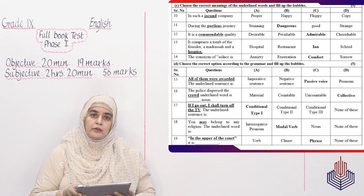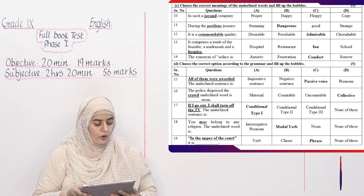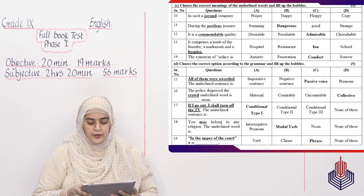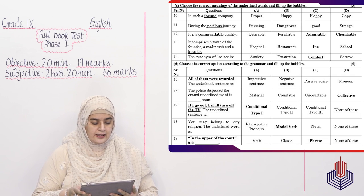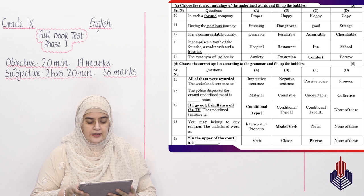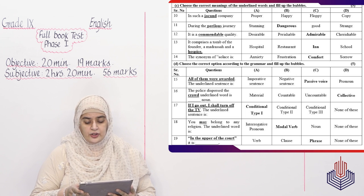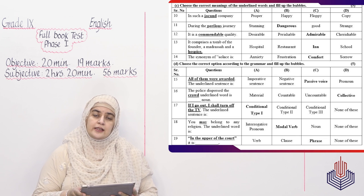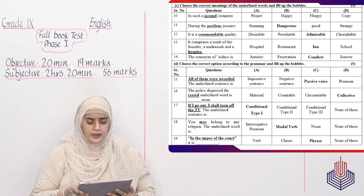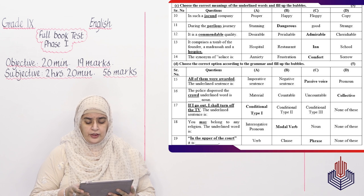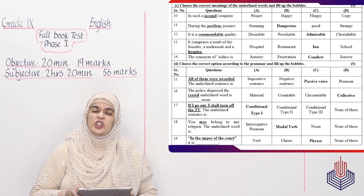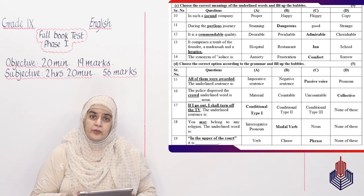After that you have to tell the correct meaning of the underlined word. MCQ number 10 is: in such a jocund company. Jocund is proper, happy, or floppy? This is happy company. Option number B. MCQ 11: During the perilous journey. Perilous ki options hain stunning, dangerous, safe ya strange. Dangerous is the right answer. Perilous is dangerous. MCQ number 12: It is a commendable quality. Commendable: desirable, perishable, admirable ya cherishable. So it's admirable. Option number C. Commendable yaani appreciatable, admirable. Kisi cheez ko aap appreciate karo.